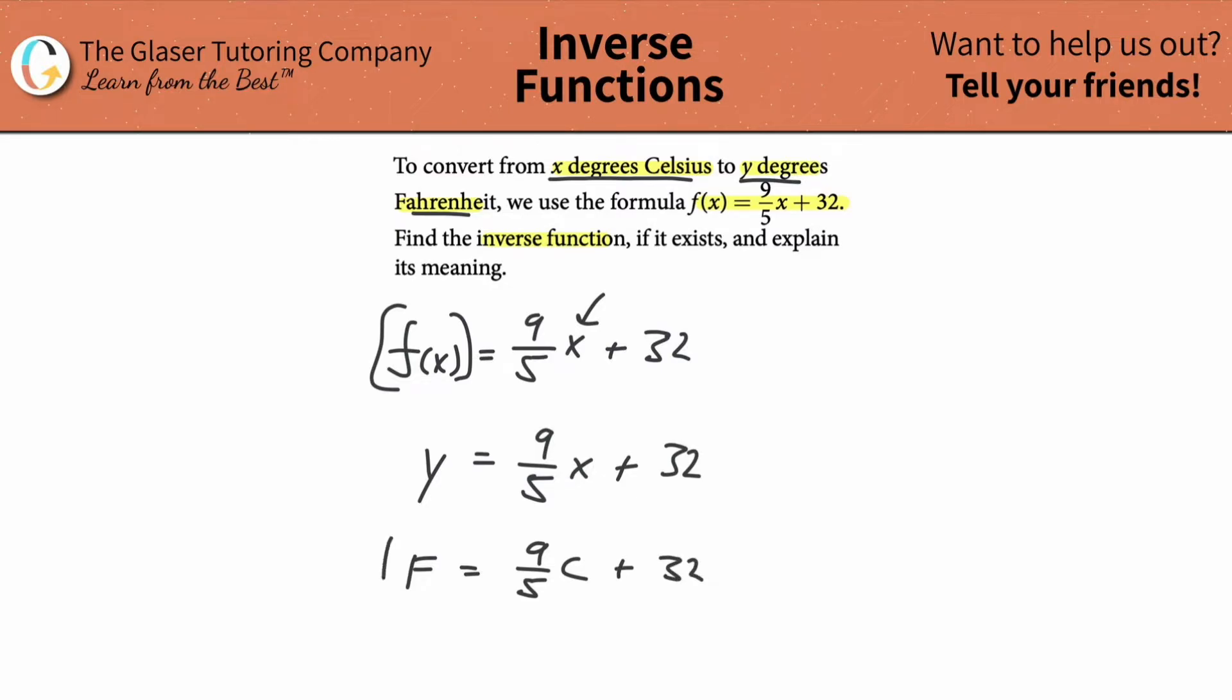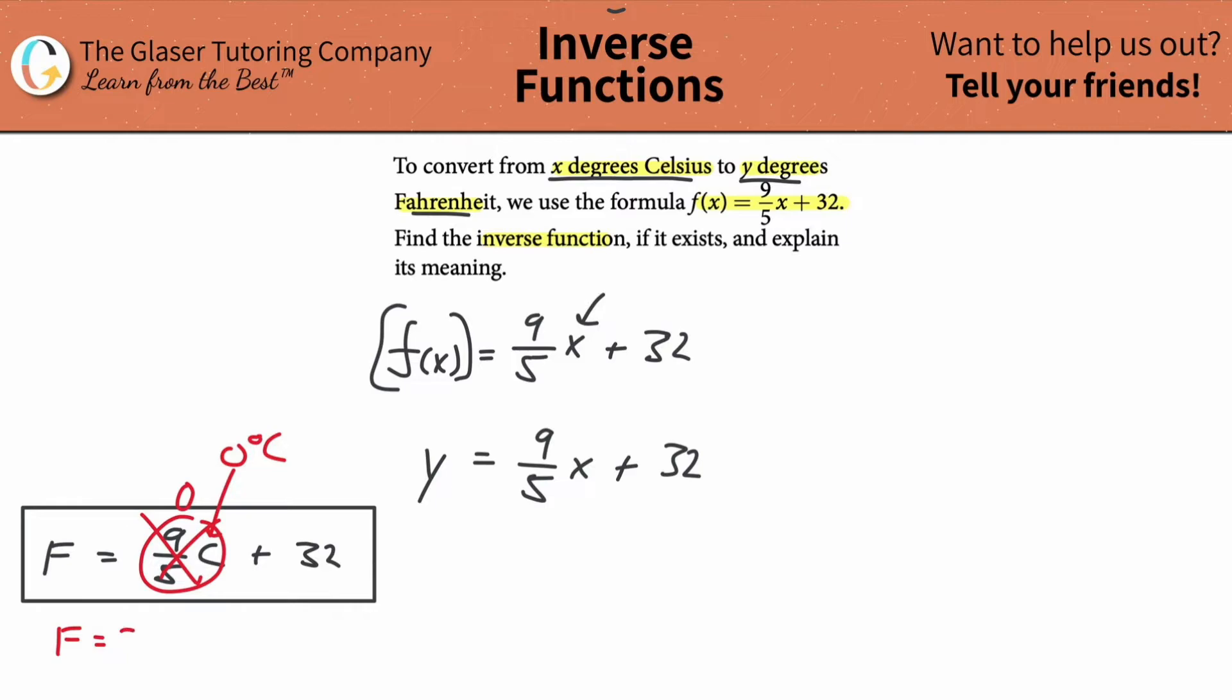So what this function means right now is that if I know the Celsius temperature, I can figure out the Fahrenheit temperature just by doing a little math. Zero degrees Celsius is going to be 32 degrees Fahrenheit. This is the freezing temperature of water in Celsius and 32 is the freezing temperature of water in Fahrenheit. When you plug in zero here, this whole term disappears, and zero plus 32 gives you 32.